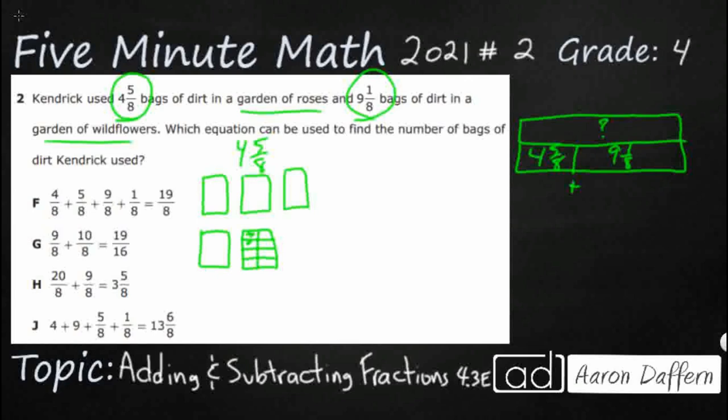So I've got one, two, three, four, five. So here's my five-eighths. And if I just shade each of these in, I've got my four right here. So that's my representation of my four and five-eighths.